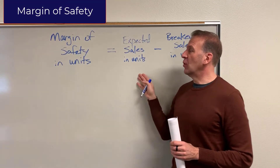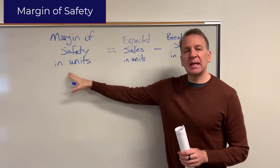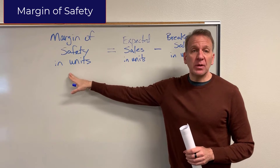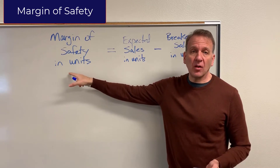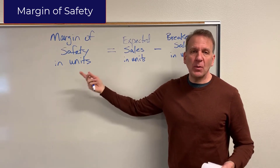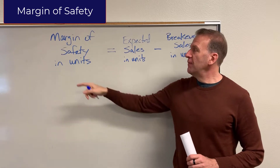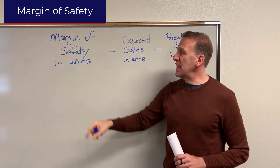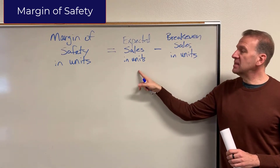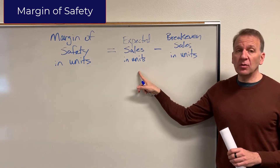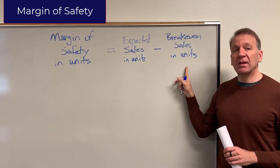What I have on the board here is the formula. This is for margin of safety in units. You can calculate for sales dollars also, and I'll mention how we do that a little bit later in the video. Margin of safety in units equals expected sales in units minus breakeven.